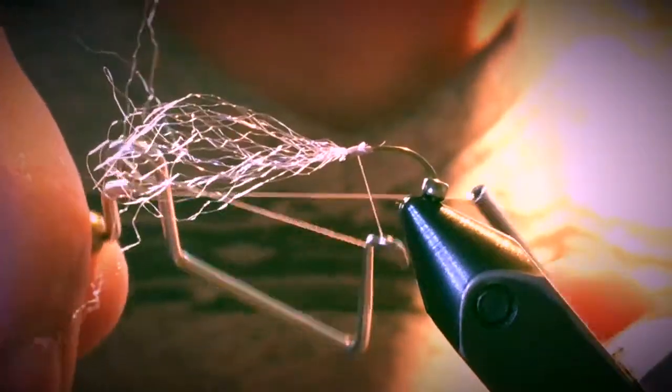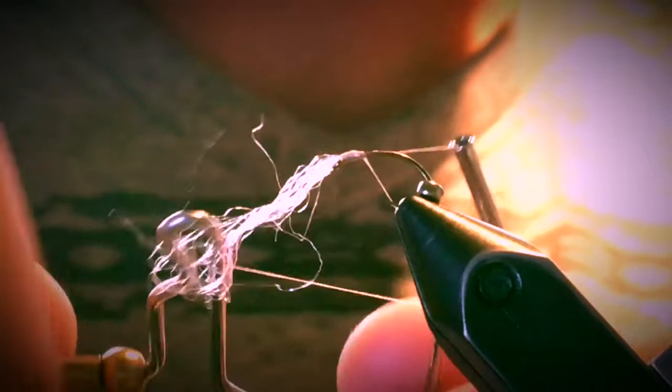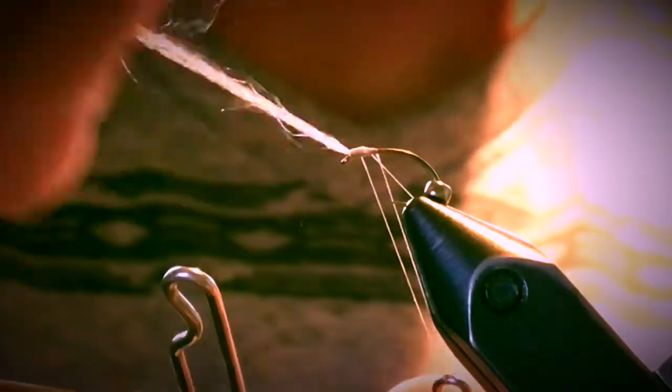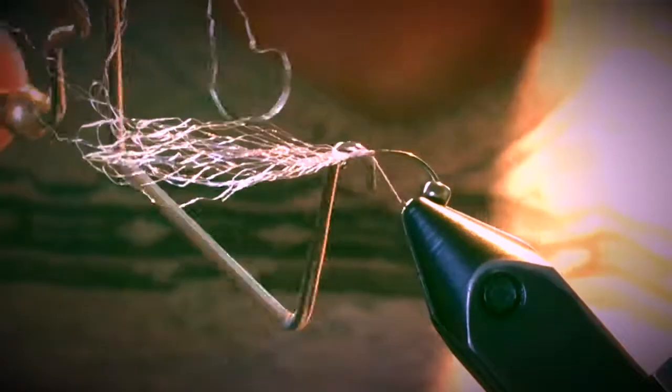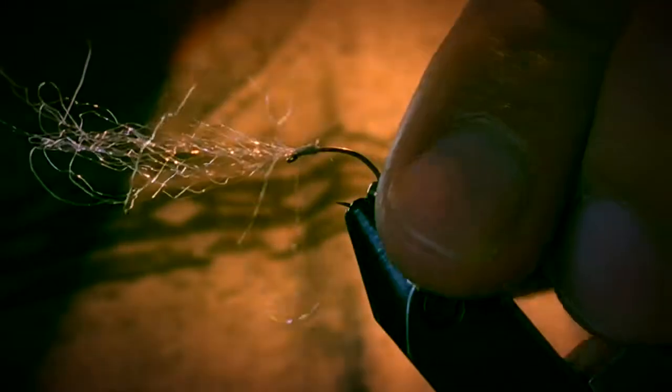Then a whip finish. If you want, you can trim the antron before the whip finish if you don't want to deal with all this, but I like to do it after the bead just to make sure it's the right size. Just make sure that's clear and then finish.